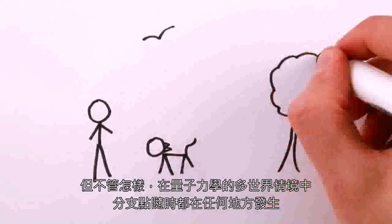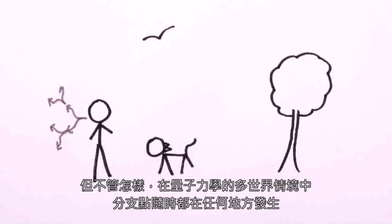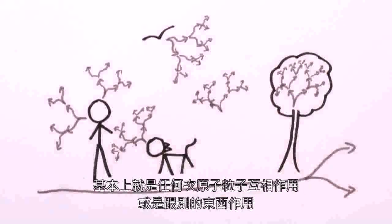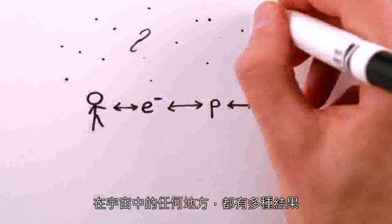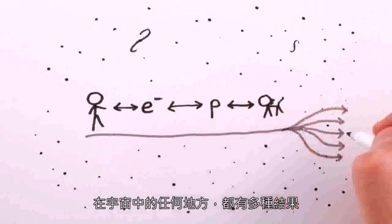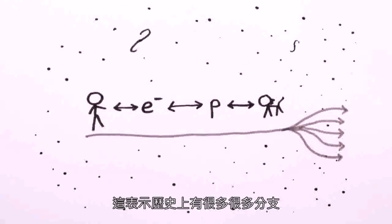But anyway, in the many-worlds picture of quantum mechanics, branch points are predicted to happen all the time, everywhere. Pretty much any time subatomic particles interact with each other, or with anything else, anywhere in the universe, there are multiple possible outcomes, which means a lot of branching of history.